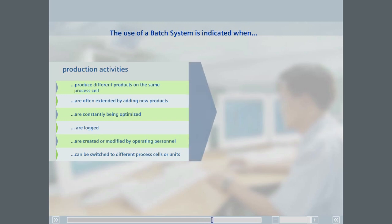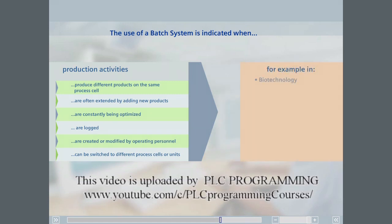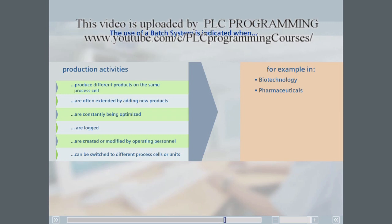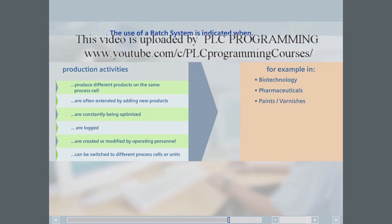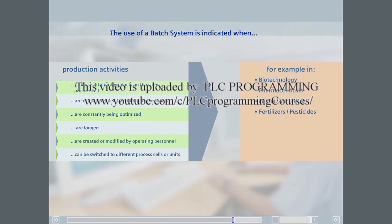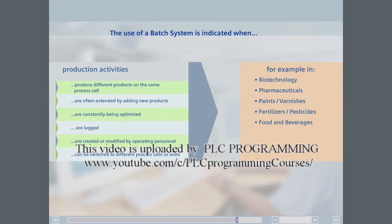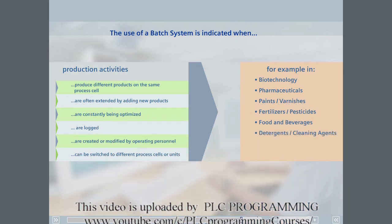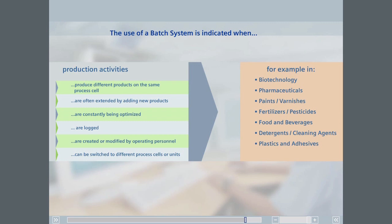Batch management software is frequently found in manufacturing, biotechnology products, pharmaceuticals, paints and varnishes, fertilizers and pesticides, food and drinks, detergents and cleaning agents, plastics and adhesives, chemicals and mineral fibers.